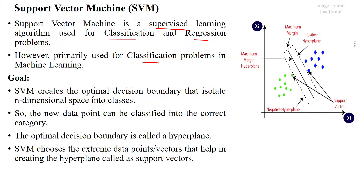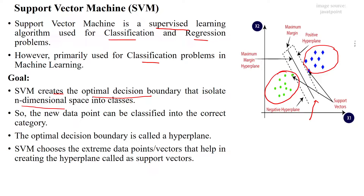The goal of SVM is to create an optimal decision boundary that isolates n-dimensional space into different classes. In this picture, the center line shown here is called the decision boundary. This decision boundary segregates the green color points as one class and the blue color points as another class, separating the dataset into different classes.